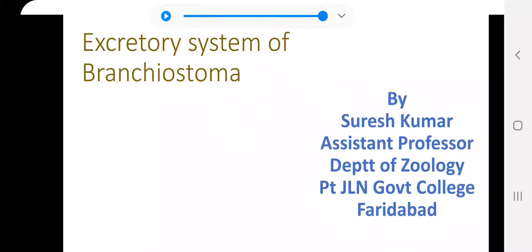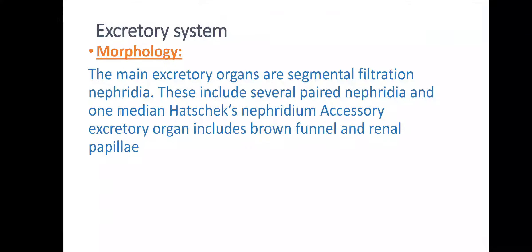Today we will discuss the excretory system of Branchiostoma. The excretory system of Branchiostoma includes four structures: one is proton nephridia, another is Hatschek's nephridium, third is brown funnels, and fourth is renal papillae. The main excretory organs are filtration nephridia or proton nephridia, which include several paired nephridia and one median Hatschek's nephridium. Accessory excretory organs are brown funnels and renal papillae.